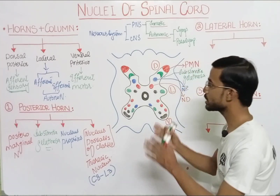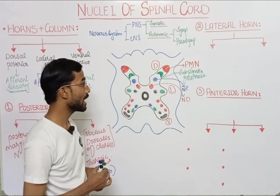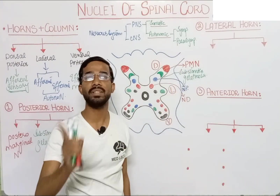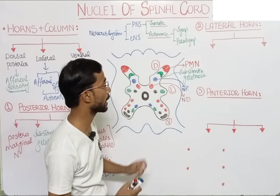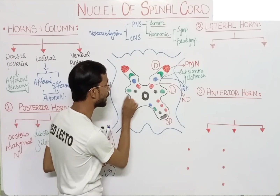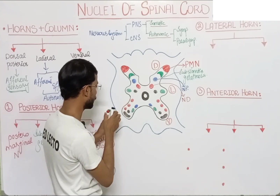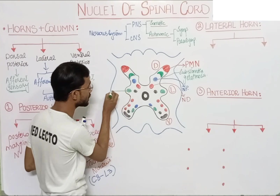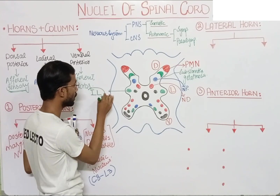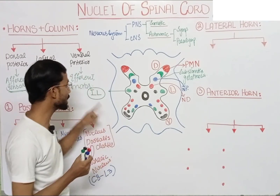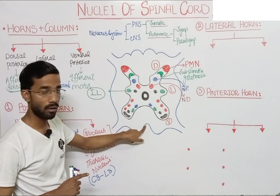Next we will discuss the lateral horn, which is present at the lateral side. As discussed, the lateral horn is for the autonomic nervous system — both parasympathetic and sympathetic. There are two nuclei in the lateral horn. The first is called the intermediolateral nucleus. It is called 'intermedial' because it is present between the dorsal and the ventral horn, and 'lateral' because it is present at the lateral side.